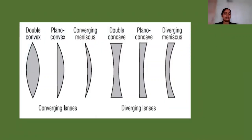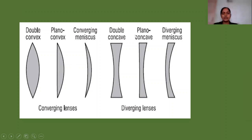There are several types of lenses: double convex, plano-convex (one plane surface and one convex), concavo-convex, double concave, plano-concave (one plane and one concave surface), and convex-concave. These are the main types of lenses.